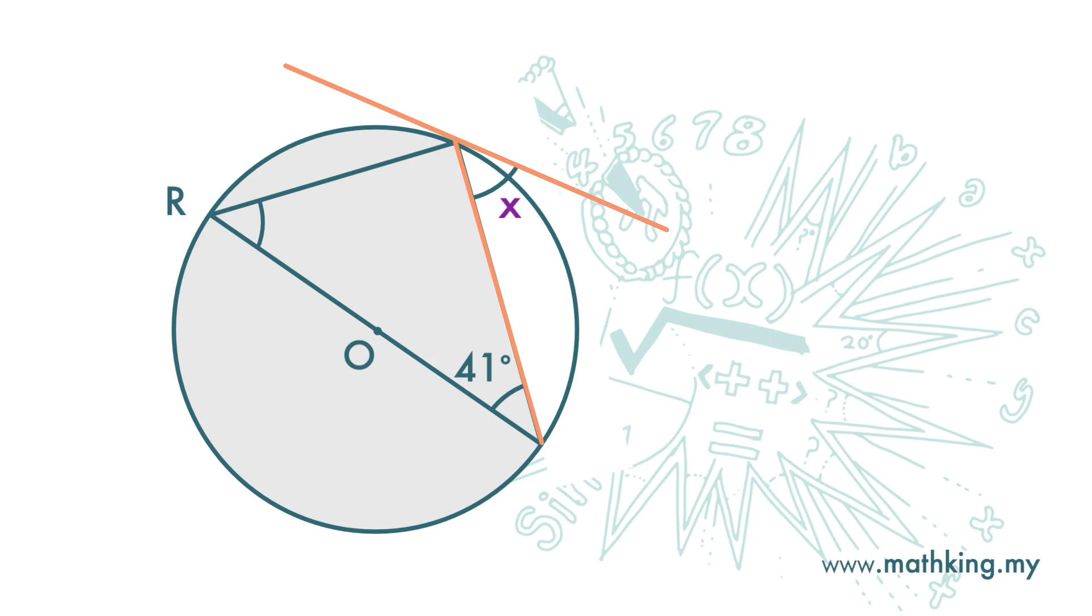If we know r, we know x. So let's find r. This is a diameter, and it subtends an angle at the circumference. We already know that the angle subtended by a diameter at the circumference is 90 degrees.